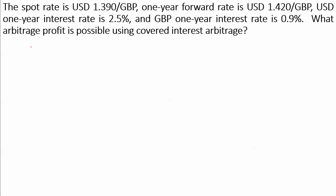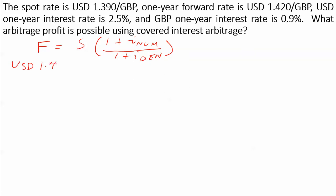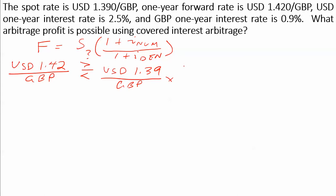To figure out how to conduct our covered interest arbitrage, we first set up the covered interest rate parity formula to see if it holds. The formula is: forward rate equals the spot rate times 1 plus the interest rate of the numerator currency, divided by 1 plus the interest rate of the denominator currency. The forward rate is 1.42 US dollars per 1 British pound. We plug in the spot rate of 1.39 US dollars per British pound, multiply by 1 plus the interest rates — the US dollar rate was 2.5% and the British pound was 0.9%. The right-hand side reduces to 1.412.